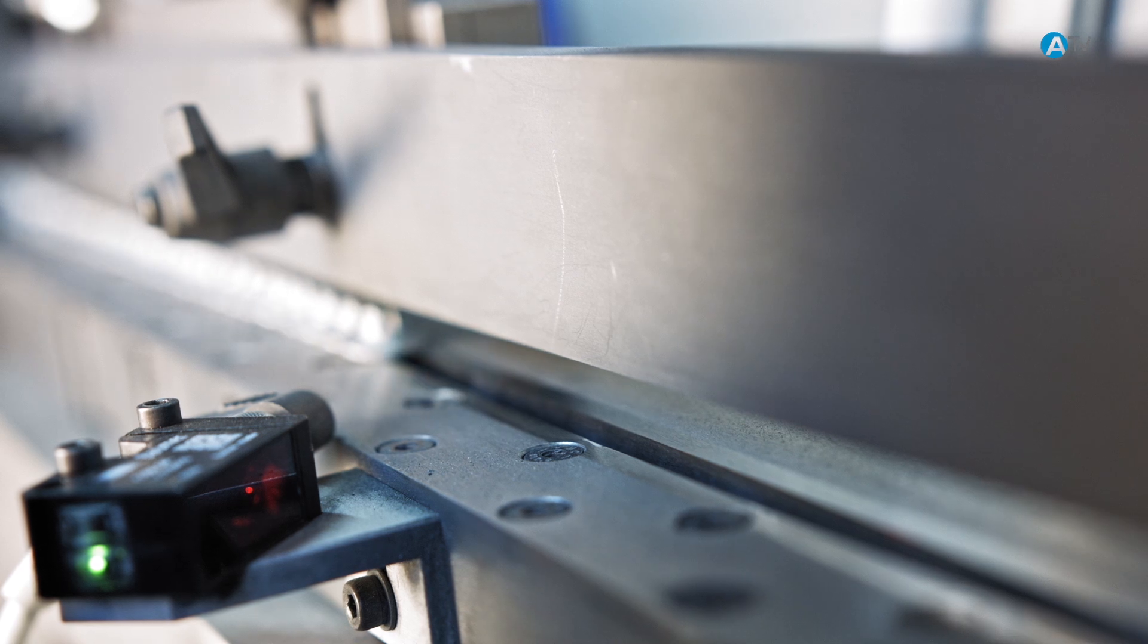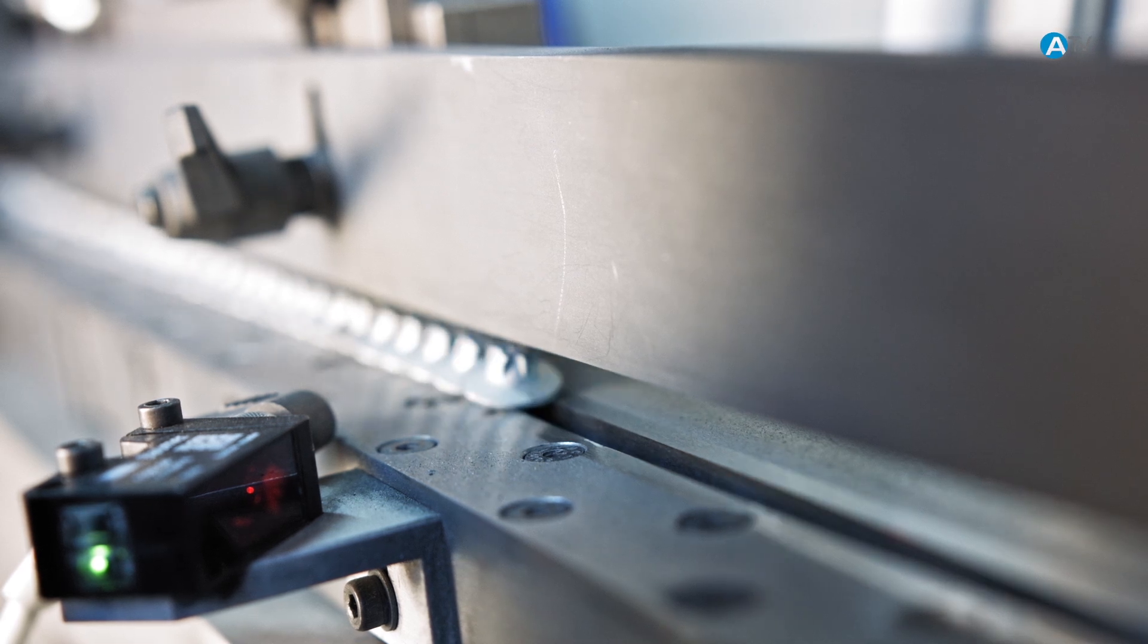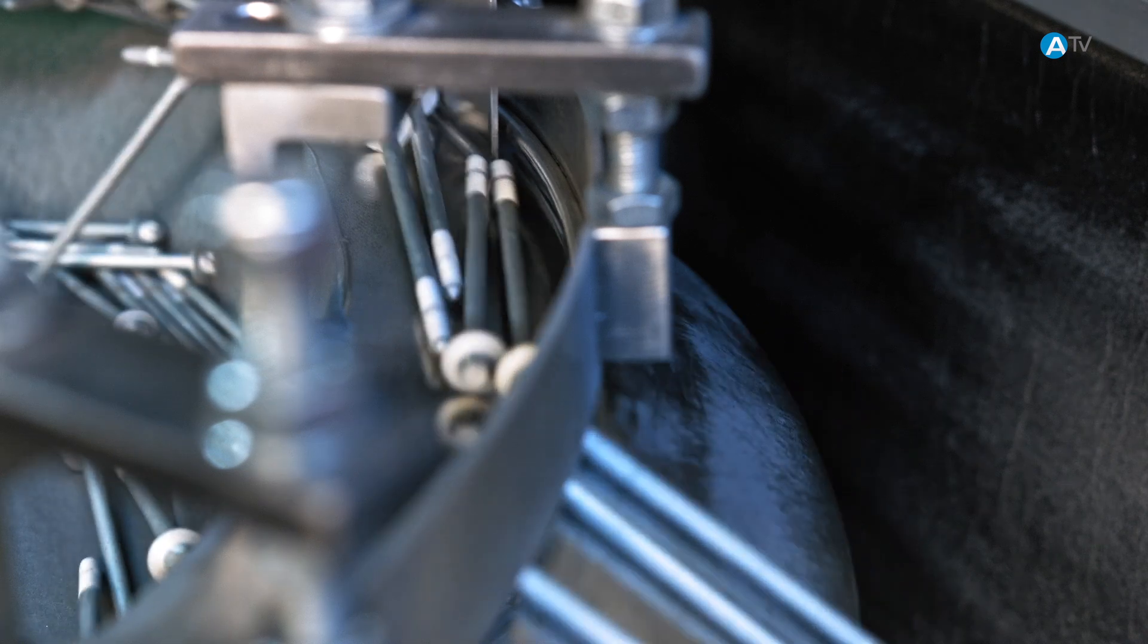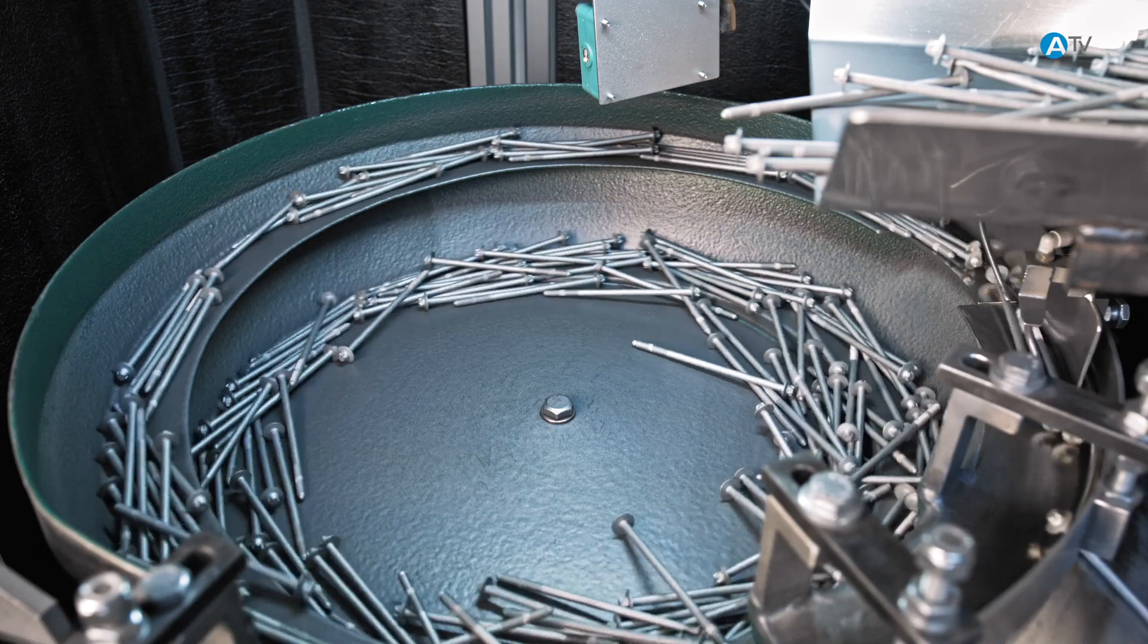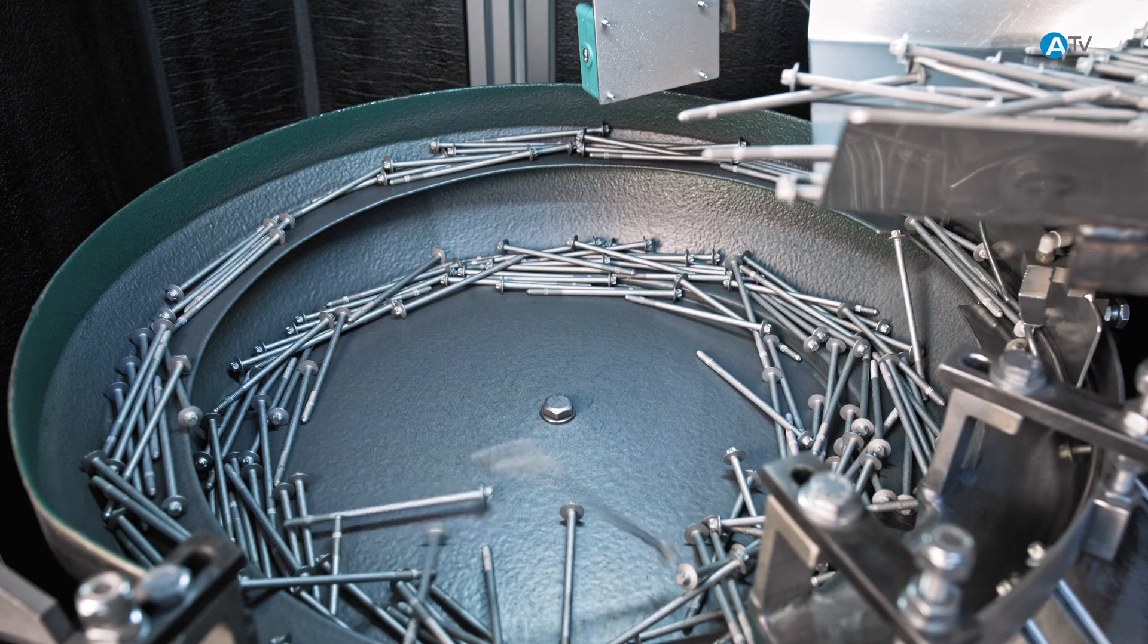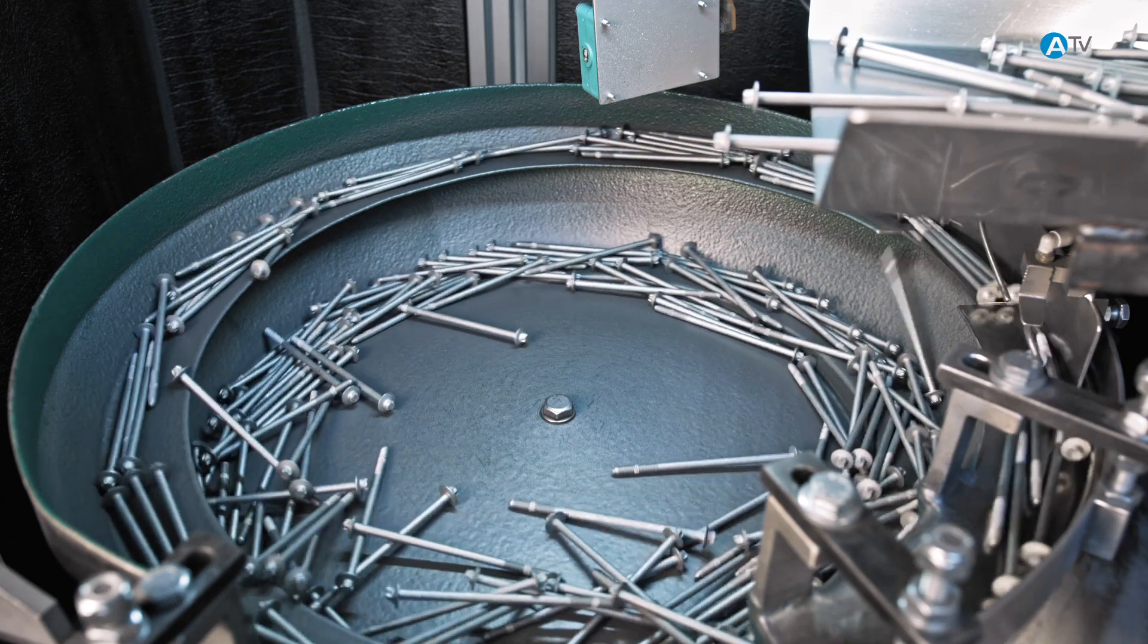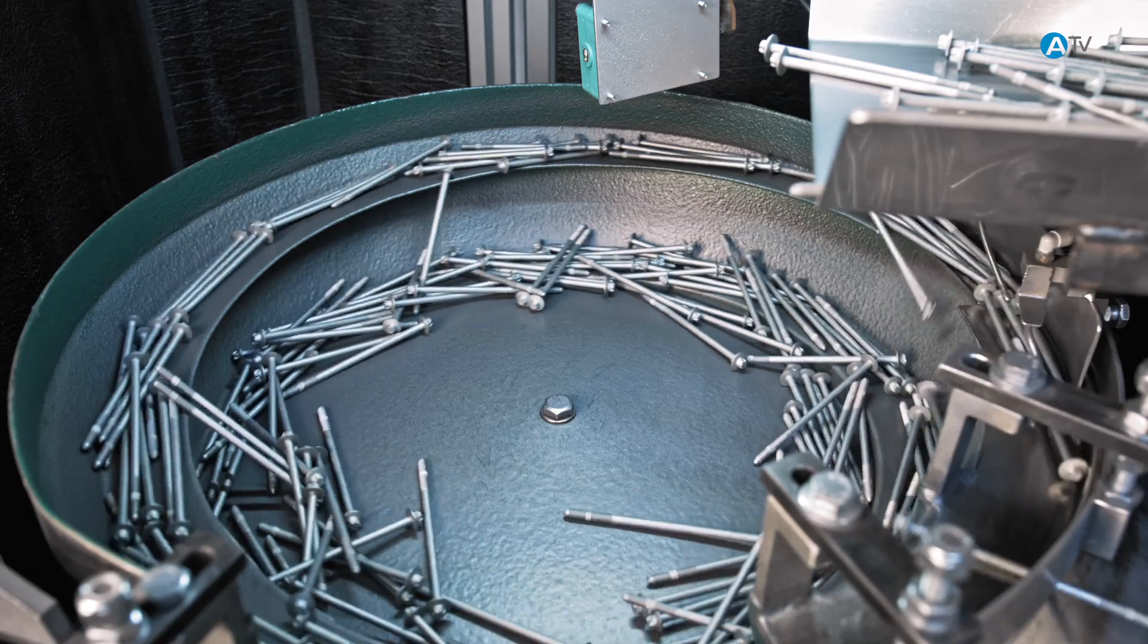Separating screws and getting them positioned correctly is a challenge faced by many automated and semi-automated production units. Vibration feeders are a solution, but they are often very noisy, and the vibrators cause abrasive wear on the screws as they move forward.